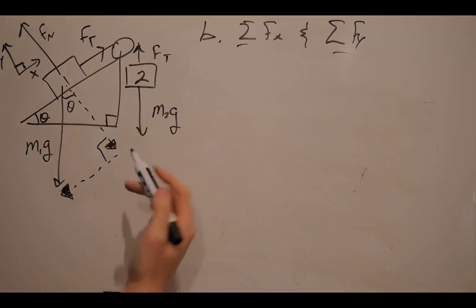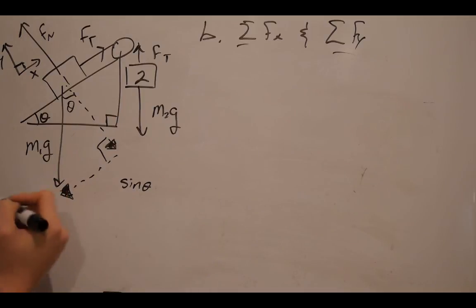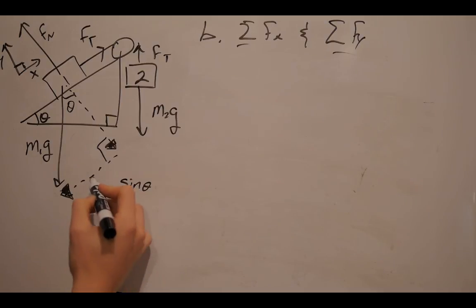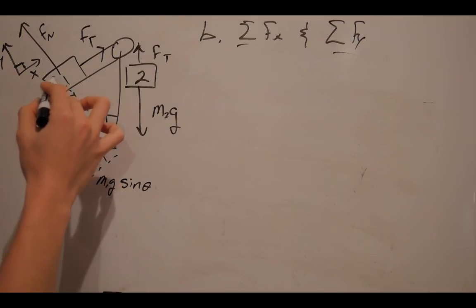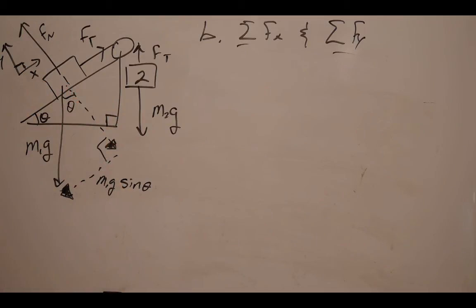Now, if you remember, SOH CAH TOA, opposite, we have to use sine of theta. And the equation always goes hypotenuse sine theta to find the opposite side. So we have M1g sine theta. And that's equal to this virtual side. And what this virtual force is telling us is that the box will be accelerating down the ramp due to the force of gravity.